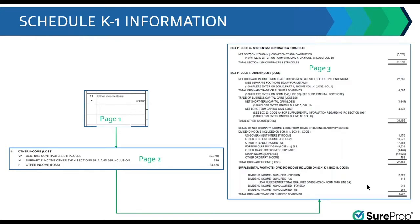I'm sure everybody must have seen such complex K-1s where you have 11i's and 13w's, where all that information needs to be analyzed, reclassed, and then input in the tax return to create the tax return. We are trying to automate that. But before that, let's see what a manual process may look like today.